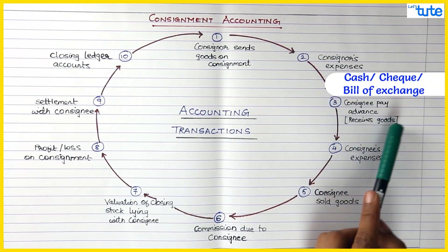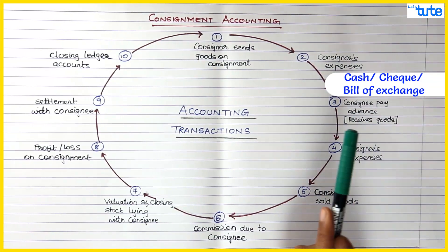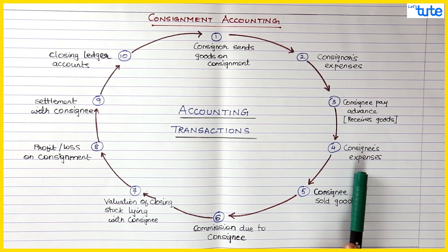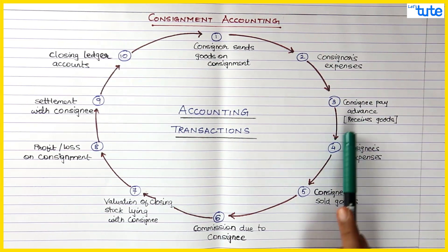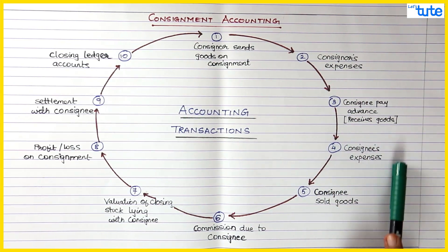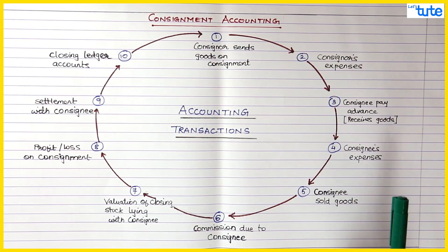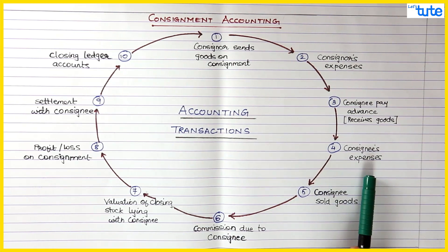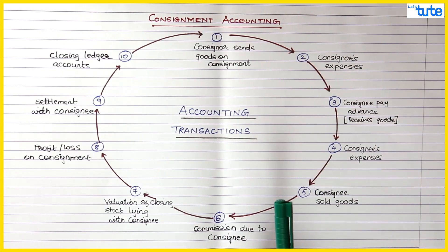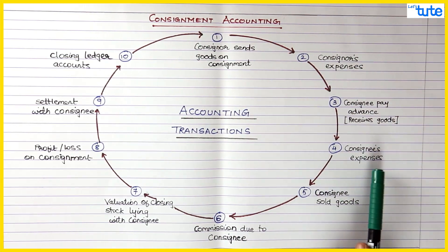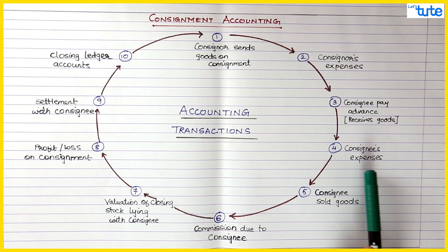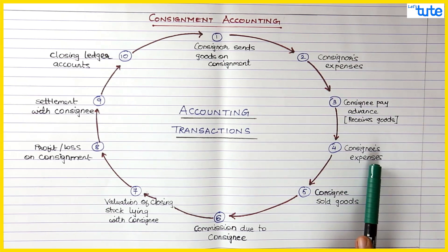Next, when the consignee receives the goods, the consignee will also incur expenses for selling those goods. Those selling expenses of the consignee will be accounted for — that is step four.